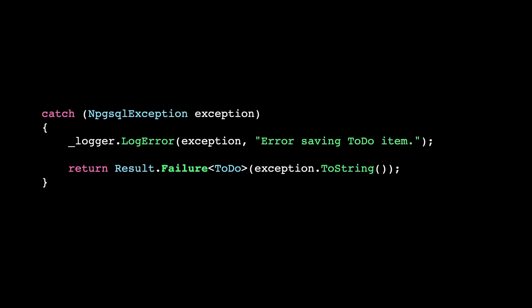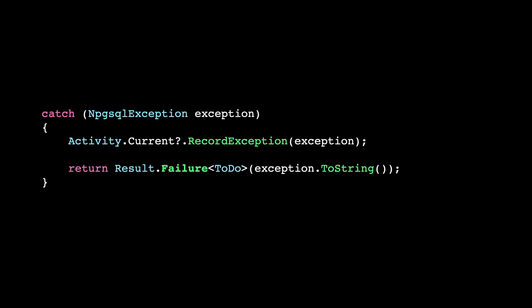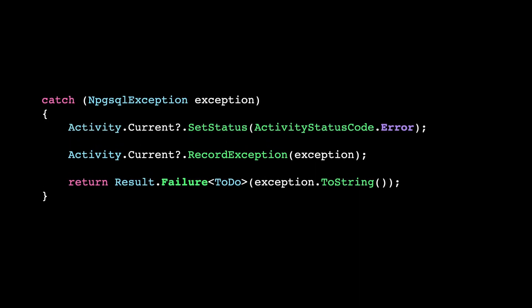Tip number five: record exceptions. When you catch an exception, instead of logging that exception or manually adding it as an event to an activity, use the RecordException method. It's a way to simplify the process of adding the exception that happened to the current activity. Besides that, you can use a flag to change the status of the current activity — so if you want to flag that activity with an error, you can do it.